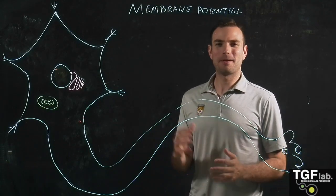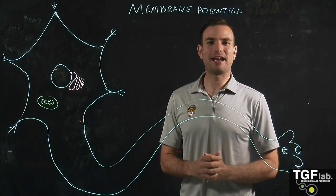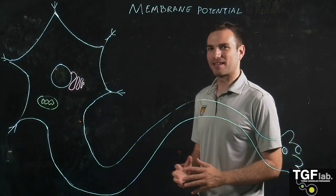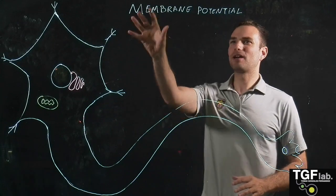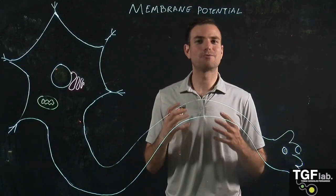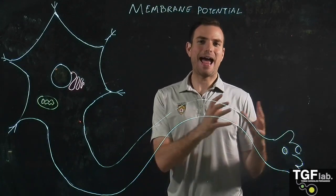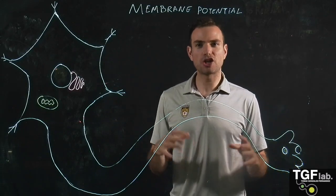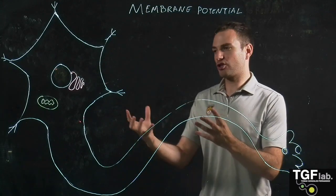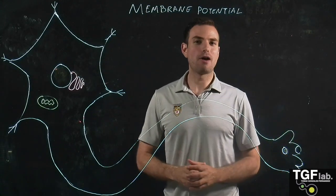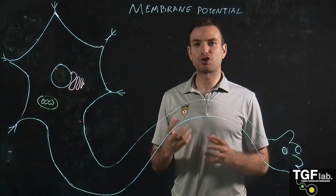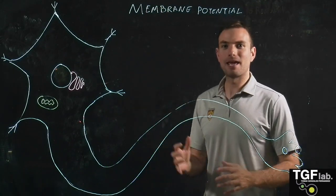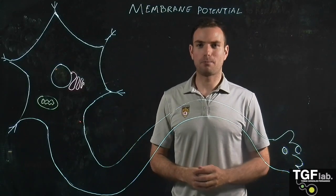Hello everyone and welcome to another Physiology for Engineers class by Professor González Fernández at Lehigh University. Today we are going to look at the membrane potential, which is very important to understand the action potential that comes next. The membrane potential and the action potential are essential to understand how the nervous impulse is transmitted from the central and peripheral nervous system to the diverse tissues and organs in our body.